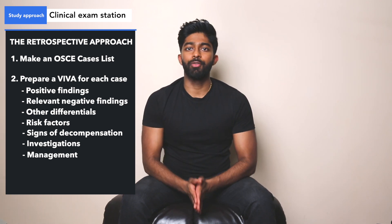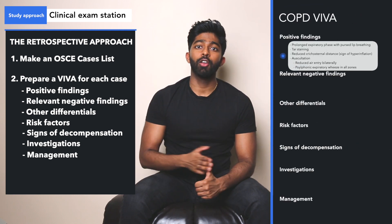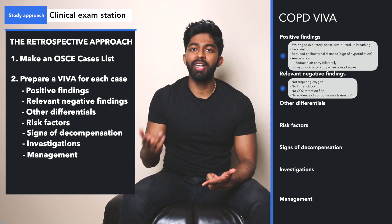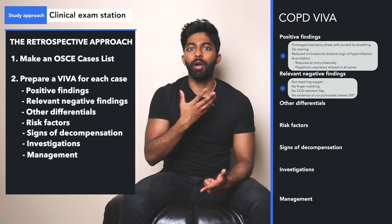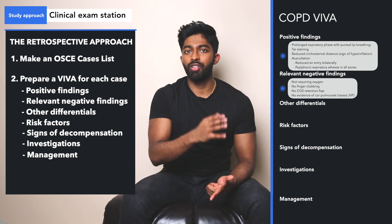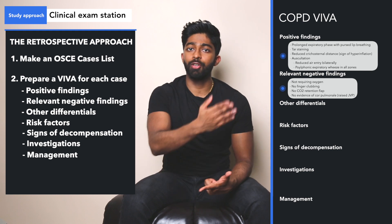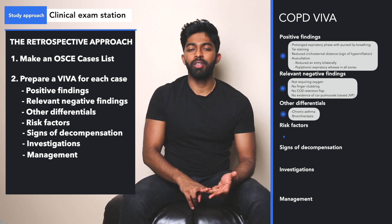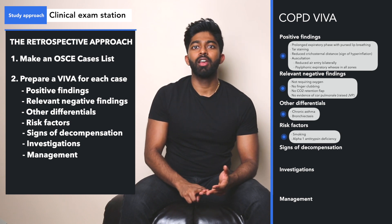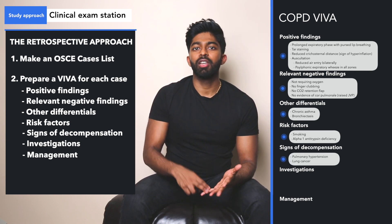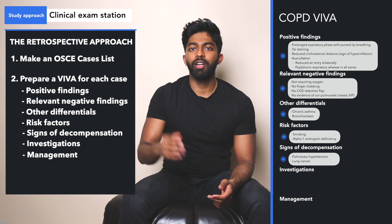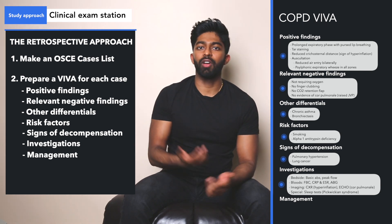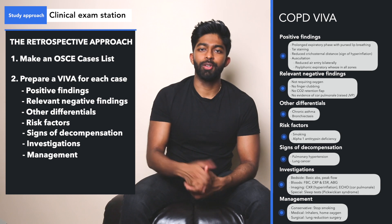For example, here's a viva I prepared for a COPD case. Positive findings, all the relevant negative findings — even simple things like this patient isn't requiring oxygen, which is a relevant negative finding because in an OSCE you won't have a patient requiring oxygen as they'd be too unwell. Other differentials include chronic asthma and bronchiectasis. Risk factors for COPD include smoking and alpha-1-antitrypsin deficiency. For investigations, always try to classify: bedside tests, blood tests, imaging, special tests. For management, classify as conservative, medical, and surgical.